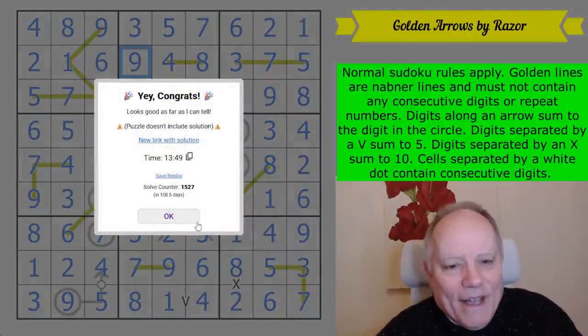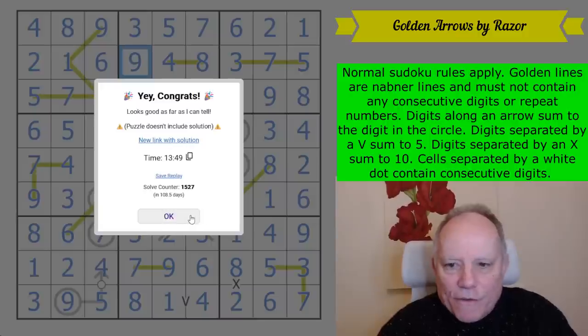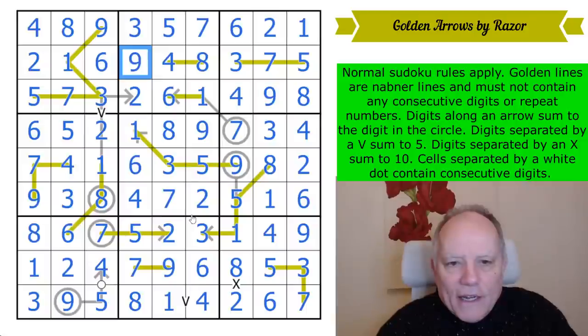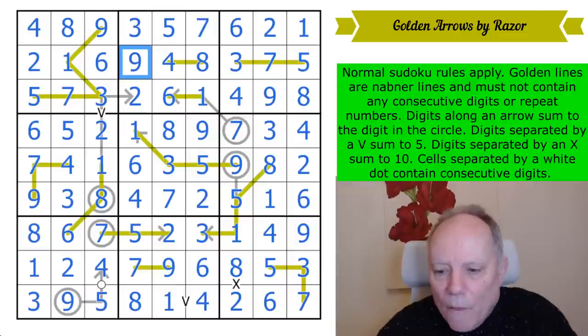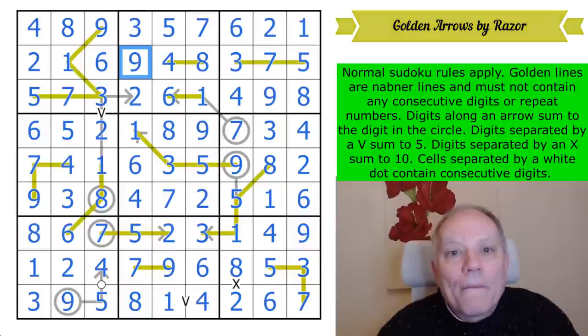So that is a very approachable NABNA puzzle. Very good introduction to the genre by Razor. Thank you for that. Very nice golden arrows. If a little difficult to determine where the arrow goes, I don't know if we'll have time to fix that, but thank you to Razor. Thank you to you for watching as always, for your kind comments and for being such a nice community generally. It really is lovely. We'll see you again soon. Thanks for watching and bye for now.